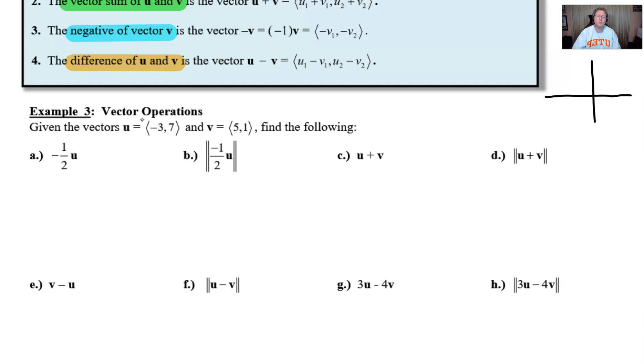Well, remember with vectors in component form, they always start at the origin, and then negative three, seven is simply the ordered pair which would be somewhere probably up there. Let's say it's simply the ordered pair that's going to serve as the terminal point. So that's what you would look like for that vector u.